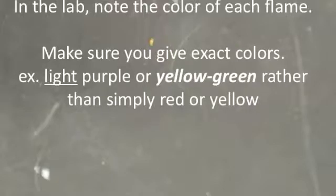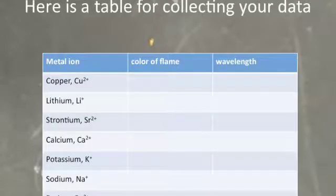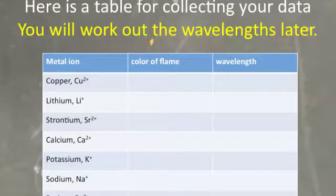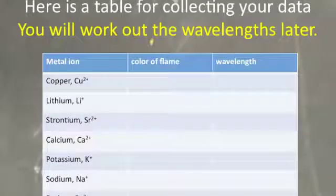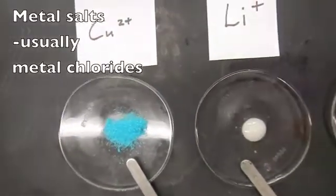We're investigating flame tests and using them to discover something about atomic structure. We're going to look at the color of each flame and be exact—use an adjective or two when describing them rather than just the plain colors of the rainbow. You can use a table to write the results down, recording the color of the flame, and you're going to work out the wavelength of the different color light using other information later.